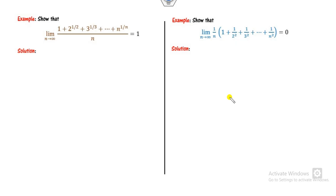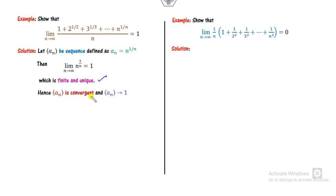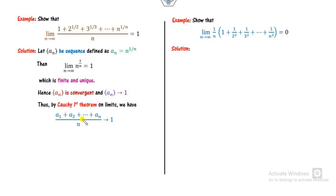Now let's look at some examples. Whenever you see a denominator of n in a sum expression, you can apply Cauchy's first theorem. Simply take the nth term a_n, compute its limit — which is 1, a finite and unique value — so the sequence is convergent. By Cauchy's first theorem, since a_n converges to 1, the arithmetic mean also converges to 1.